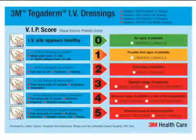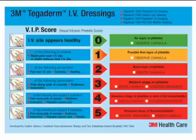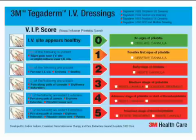The Visual Infusion Phlebitis score is widely accepted as the tool of choice for monitoring cannula sites. The VIP score provides the practitioner with a tool that can describe the condition of the site. It also promotes an action based upon the result of the observation — for example, cannula removal. As a practitioner, you are responsible for deciding if a cannula site is healthy or showing signs of phlebitis. The VIP score helps you in your assessment and documentation.